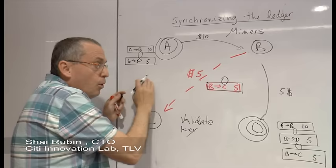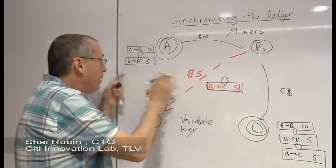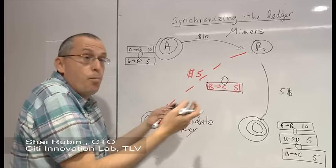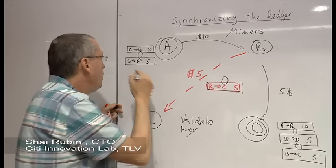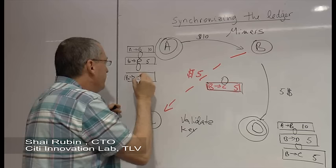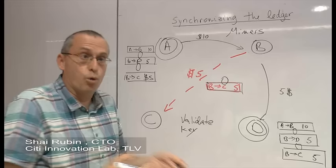What all miners are going to do? A, for example, sees that this transaction is already validated and can be added to the ledger. Which means there is no point in trying to resolve this transaction and get a reward. A will immediately take this transaction, add it to its own ledger and will look for another transaction to work on and hopefully to get the reward next time.